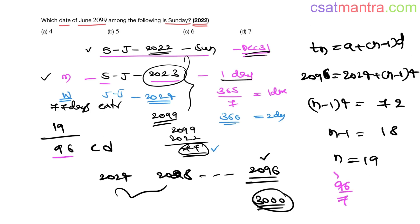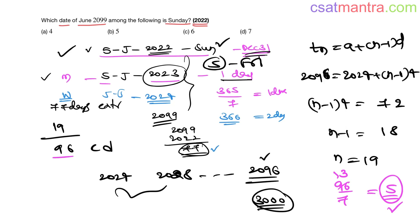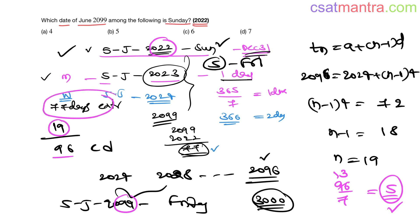96 divided by 7: 7 × 13 = 91, so the remainder is 5. You have 5 extra days. The 5th day after Sunday would be Friday. Day 0 is Sunday, day 1 is Monday, and day 5 is Friday. So 5th June 2099 would be Friday. From 2022 to 2099 we have 77 years — 77 extra days plus 19 extra days from leap years equals 96 extra days, divided by 7 gives 5 extra days.